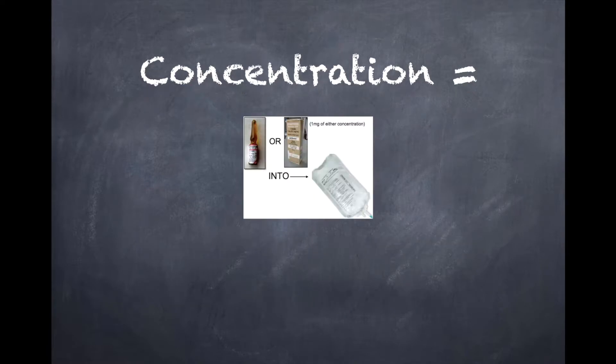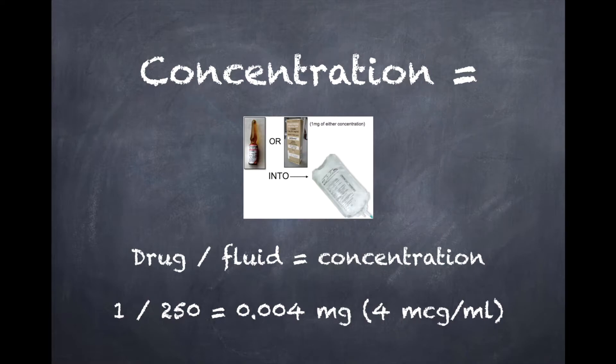Here's another example of like an epi drip. And same thing, drug divided by fluid is going to be concentration. So one divided by 250, one milligram divided by 250 mLs, that's going to be 0.004 milligrams, or to make it simple, four micrograms per milliliter.